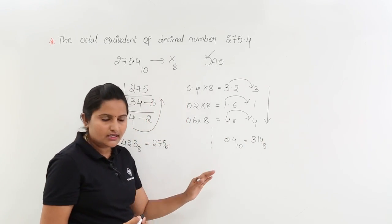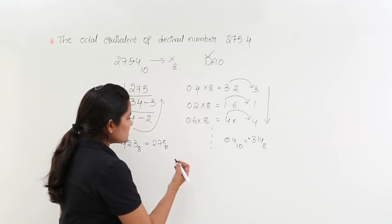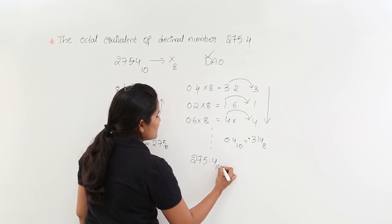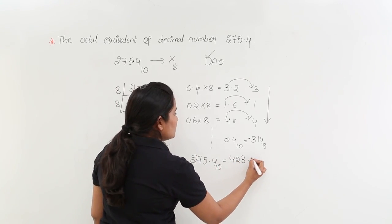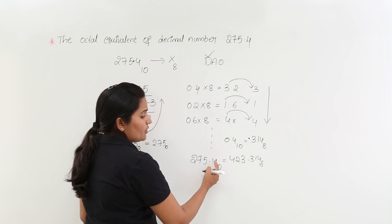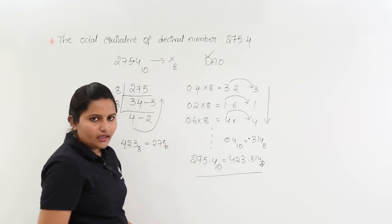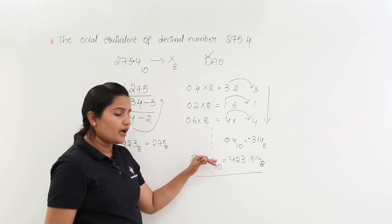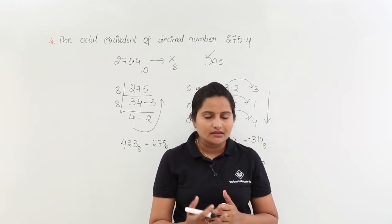So 0.314 is the octal equivalent of 0.4 decimal. Adding both results: 275.4 decimal is equivalent to 423.314 octal. Here, 275 equals 423 octal and 0.4 equals 0.314 octal. So the octal equivalent of decimal number 275.4 is 423.314 octal. In this way we can convert any decimal number into any other number system.